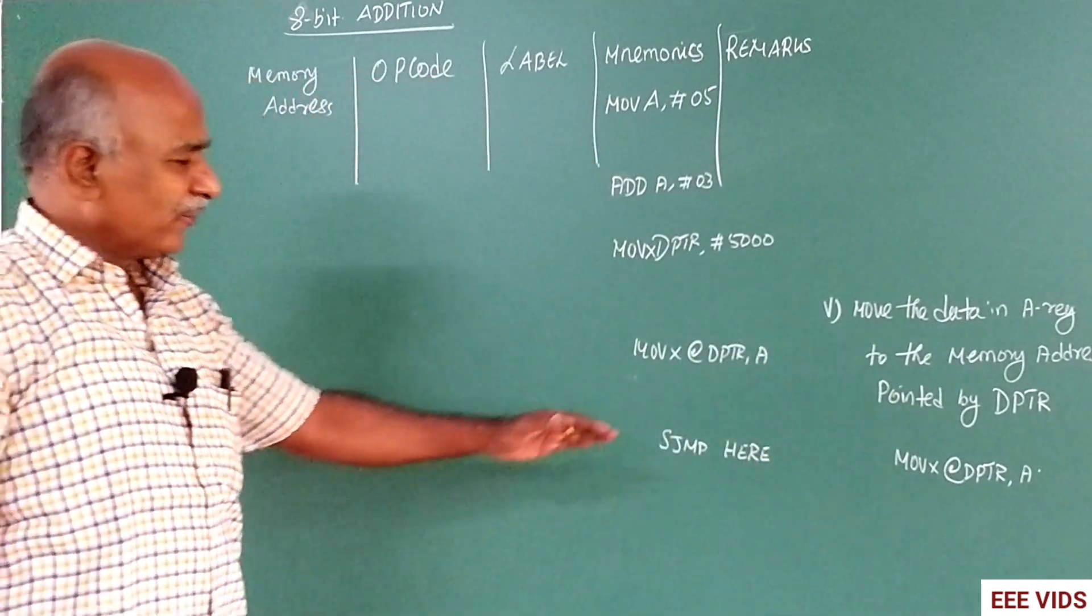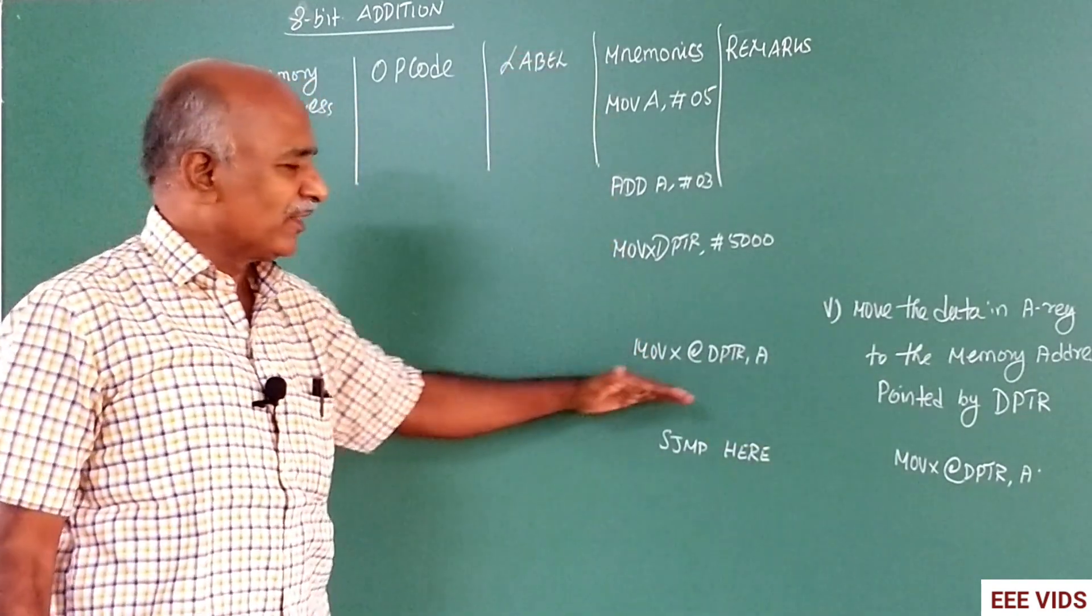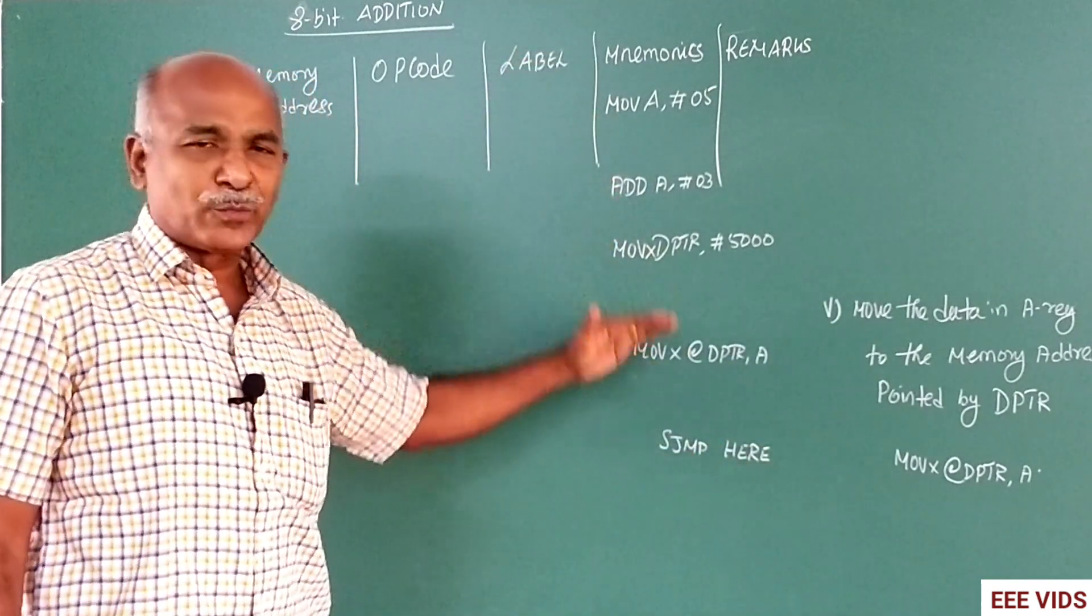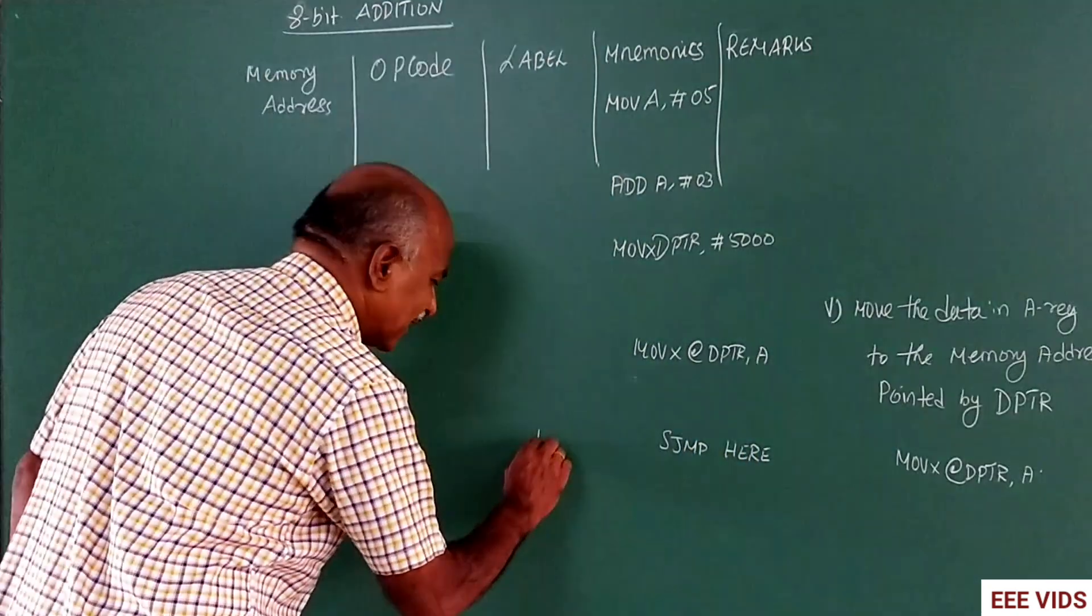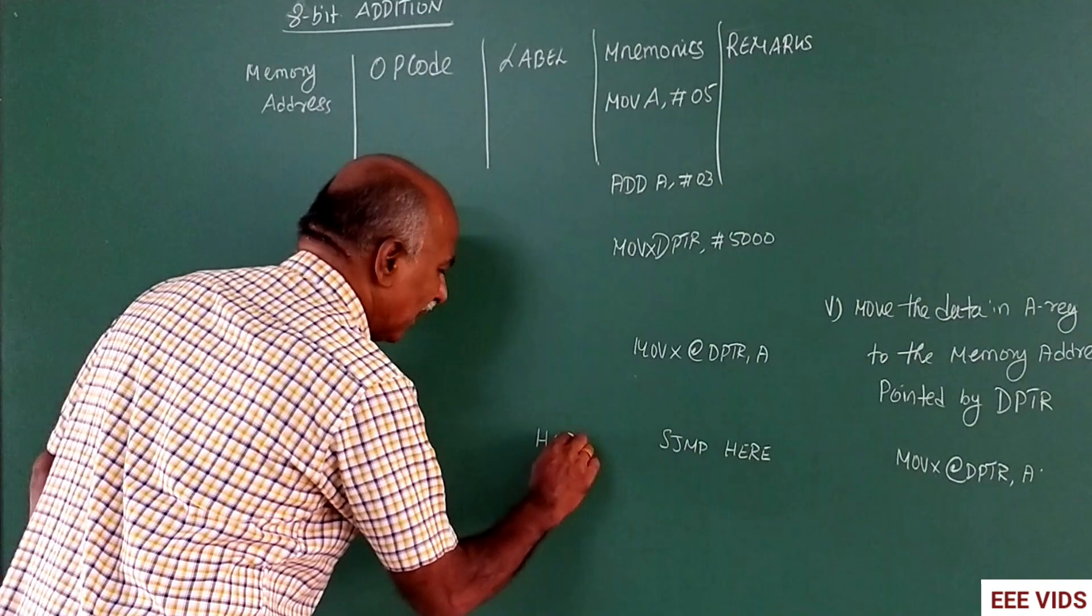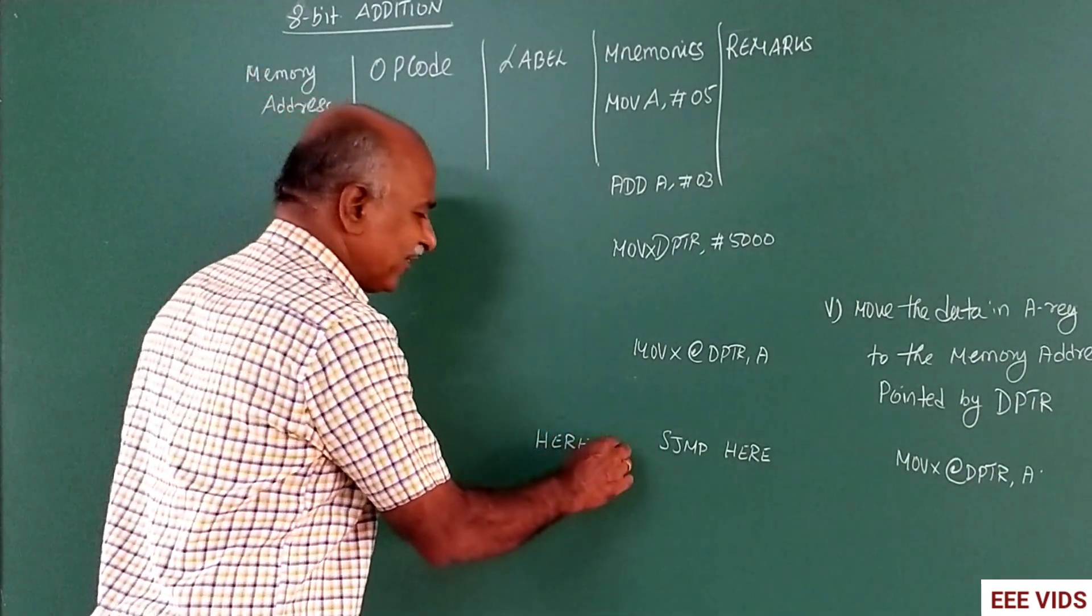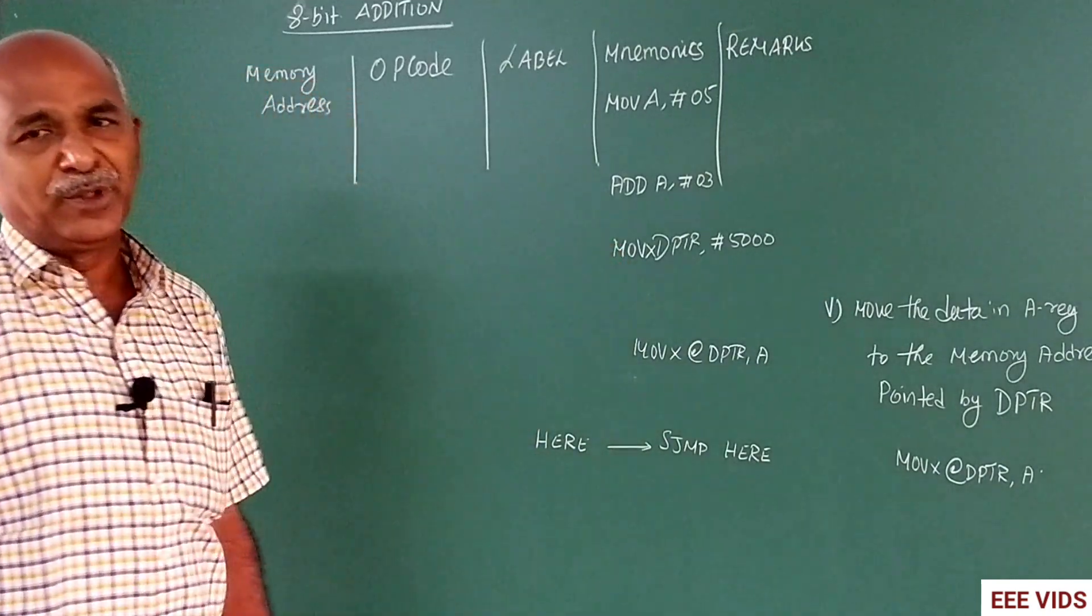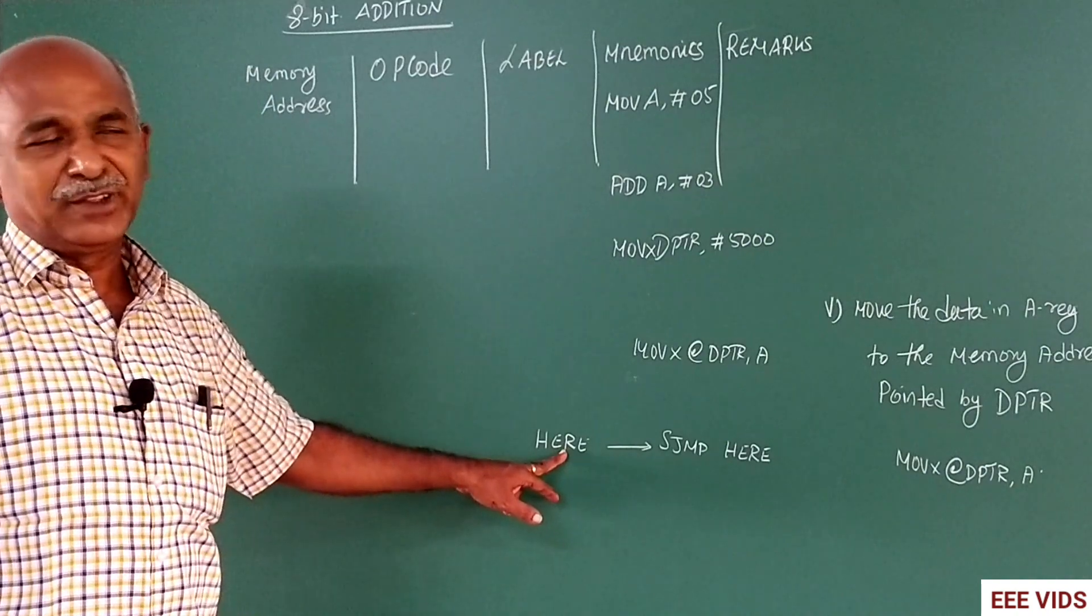In the program, the instruction is executed, the program is stopped. SJMP to here, the instruction executes. There is a label here. SJMP instruction uses a label name.